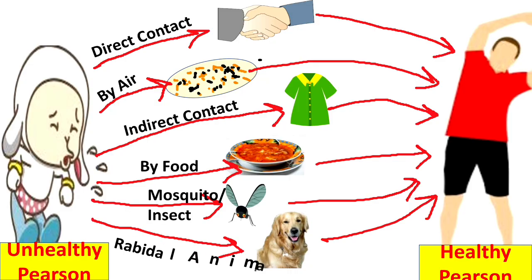If an animal like a dog or monkey bites a healthy person, then that person can suffer from a disease like rabies.